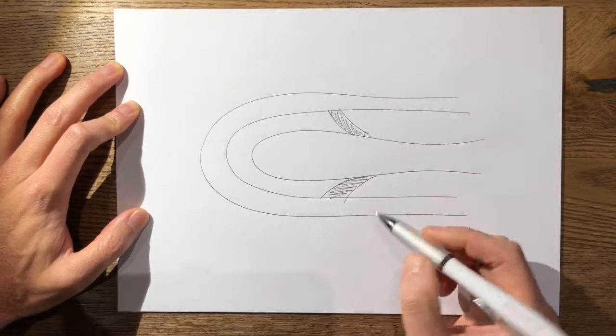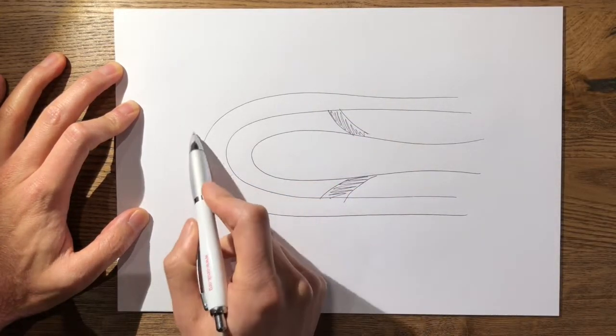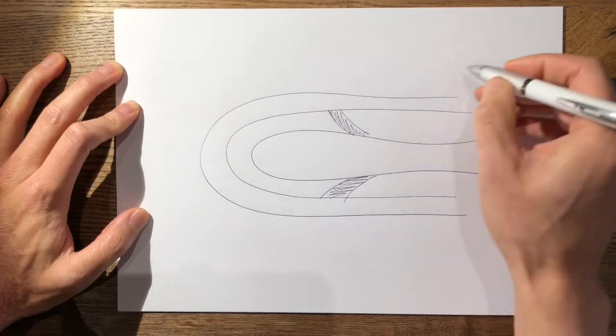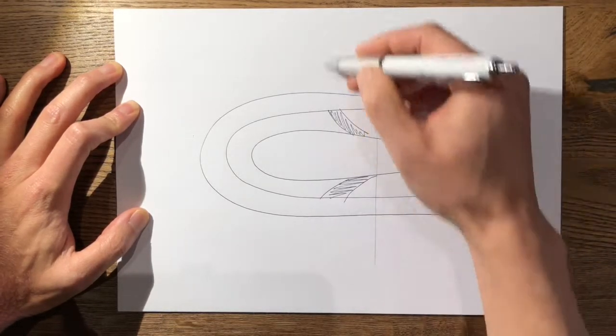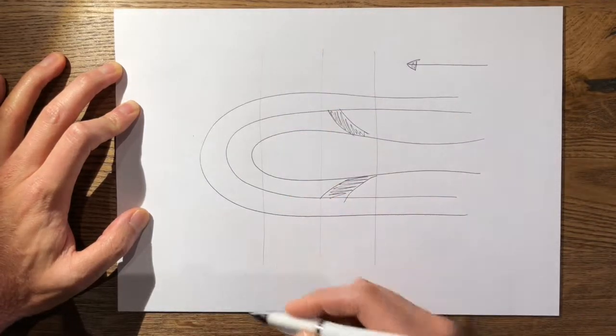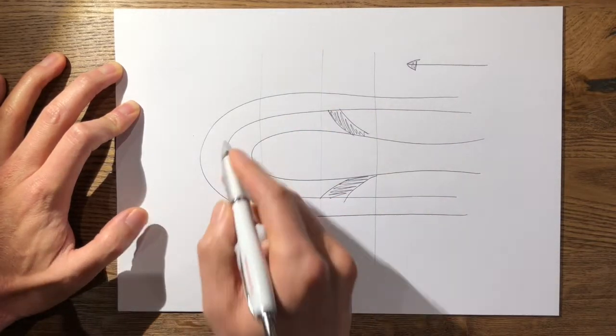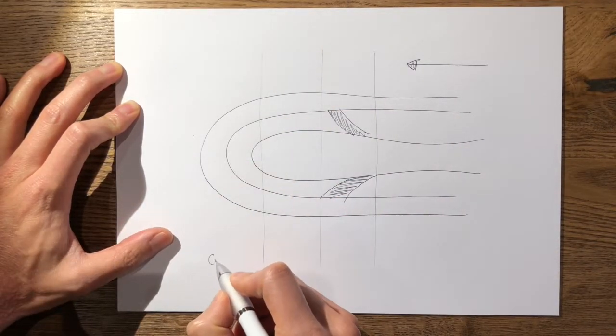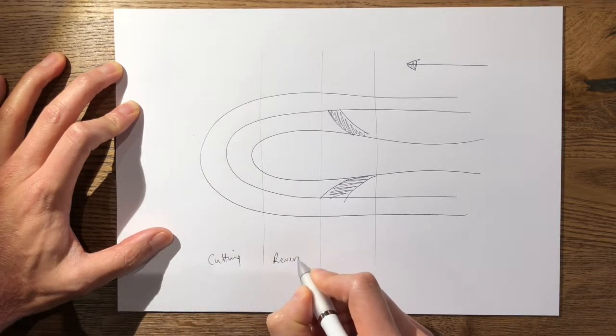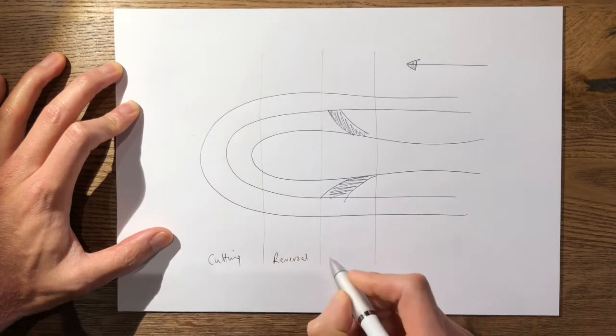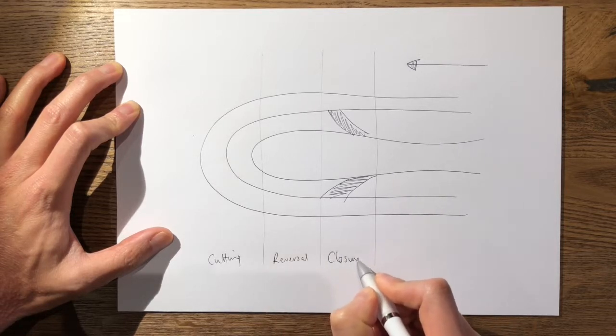What you have here is the front of your cutting cone, and it's cutting in this direction. You largely have three areas of your cutting cone: first, the front is your cutting zone, the middle is your reversal zone, and then right at the back is your closing zone.